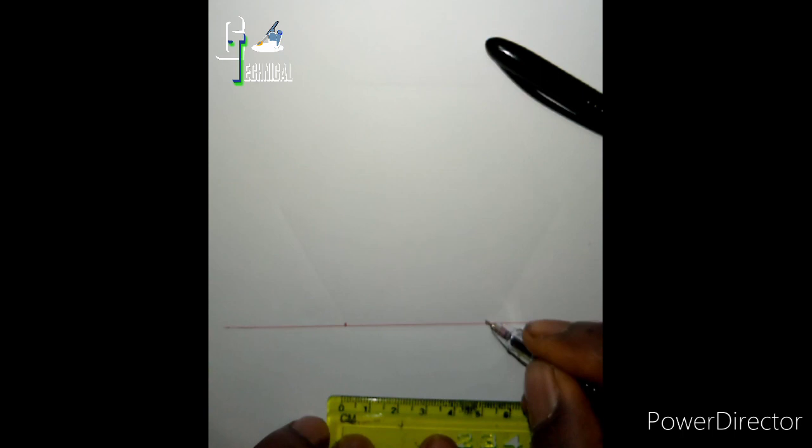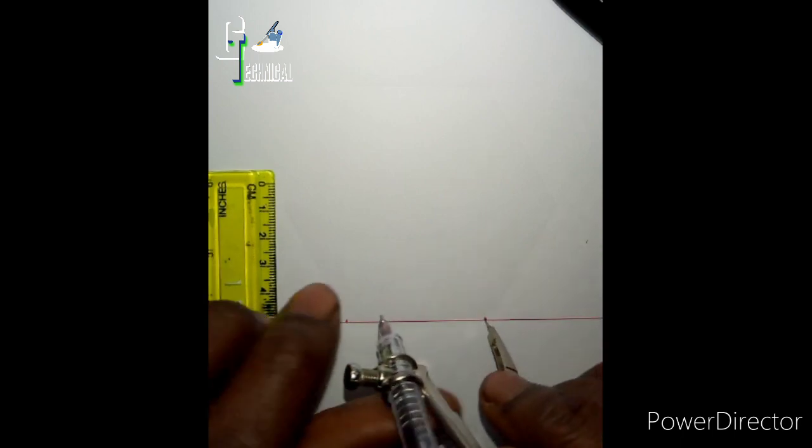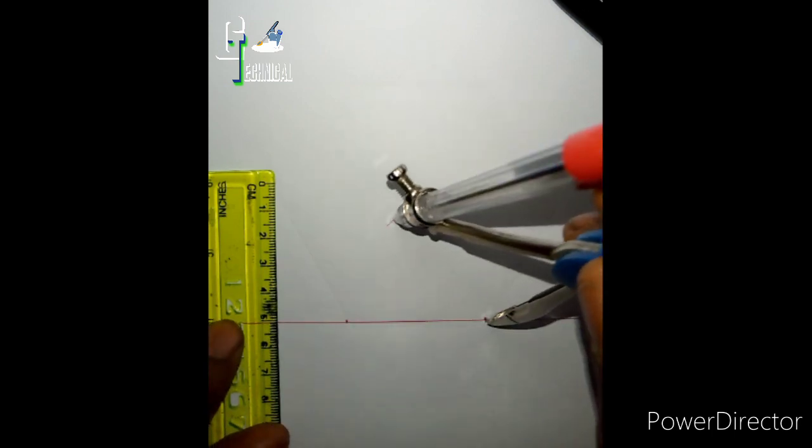Okay, so this is our 5 cm. Take this and then take our measurement here. This is 5 cm. Now we'll mark this.